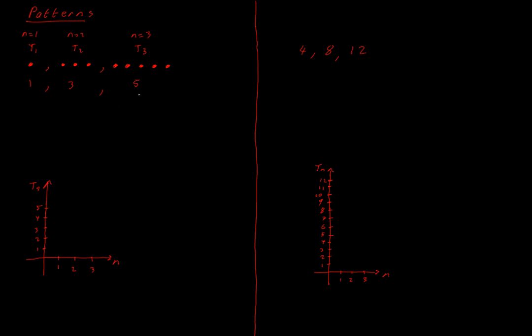So what type of pattern have I got here? What's happening to get me from here to here to here? Well, I've started out with one dot, and then I have three dots. So I added two extra dots. And if I had three dots, and I go up to five dots, I have added two dots. So the pattern that brings me from one situation to the next, from one term to the next, is that I add two each time.